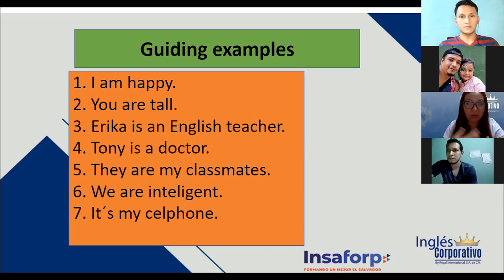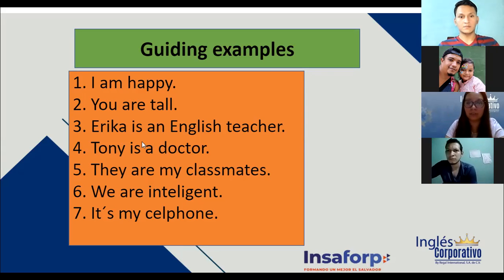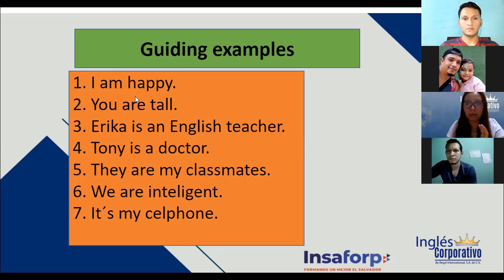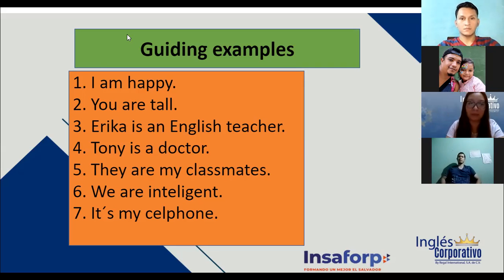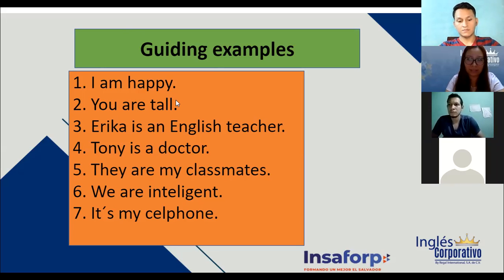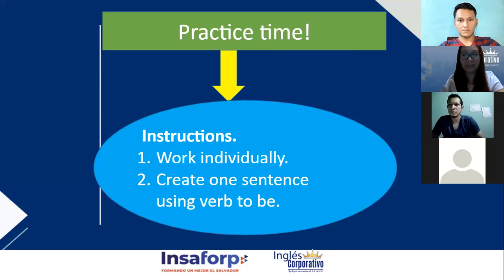Y esto es lo que les mencionaba — algunos de ustedes cuando les pedí las oraciones con possessive adjectives usaron 'my', 'your', 'his', 'her', pero en la siguiente daban cosas como 'I am happy' o 'I am in my house'. En ese escenario no estoy usando possessive adjectives, pero sí está correcto — es afirmativo, sujeto, verbo, complemento. So here is what we're going to do: vamos a escribir dos oraciones en afirmativo usando el verbo 'to be' y una usando un verbo de acción — tres oraciones en total.